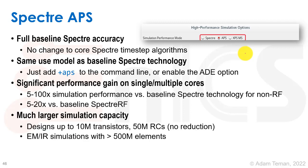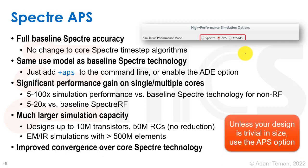APS has a much larger simulation capacity than regular Spectre. They claim it can do up to 10 million transistors, 50 million RCs without reduction, and EMIR simulations with over 500 million elements. It really improves convergence over core Spectre technology. So unless your design is trivial in size, Cadence tells you that you should use the APS option.